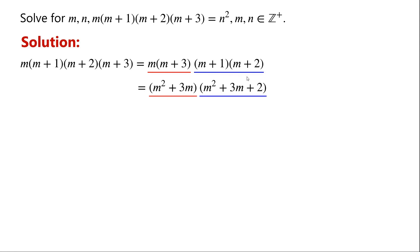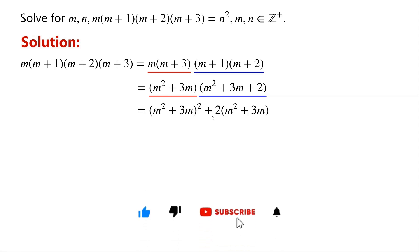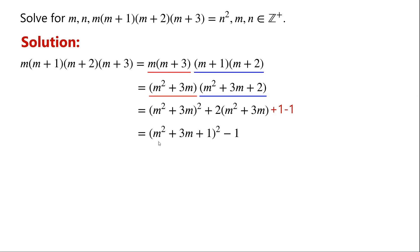(m+1) times (m+2) is equal to m squared plus 3m plus 2. Combining these, we get (m squared plus 3m) times (m squared plus 3m plus 2), which equals (m squared plus 3m) squared plus 2 times (m squared plus 3m). We then add 1 and minus 1 to complete the expression.